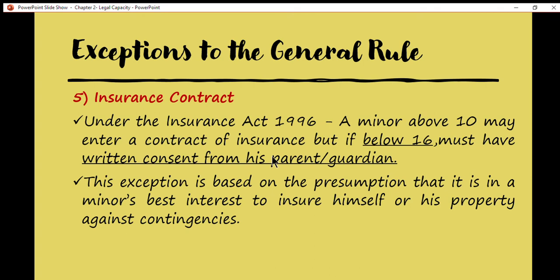Another exception is the insurance contract. According to the Insurance Act 1996, a minor above 10 years old may enter into a contract of insurance, but if below 16, must have written consent from his parents or guardian. This exception is based on the presumption that it is in a minor's best interest to insure himself or his property. Even a baby can enter into a valid insurance contract because the primary consideration is to safeguard the interest of the minor.